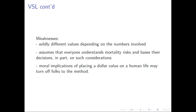The weaknesses of VSLs are that they have wildly different values depending upon the numbers involved. They assume that everyone understands mortality risk and bases their decision in part on such considerations. We know this is an information problem — some people don't necessarily understand various types of mortality risks, making it hard to generate population averages for how people react to different mortality risks. There are also obvious moral implications of placing a dollar value on a human life and the ethical considerations that come with that. VSLs have at times been politically contentious for these very same reasons.